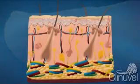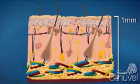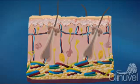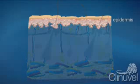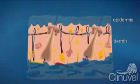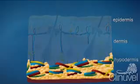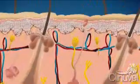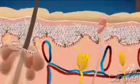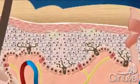Our skin is, on average, 1mm thick and consists of three primary layers: the epidermis, the dermis, and the hypodermis. The epidermis is the outermost layer of the human body.